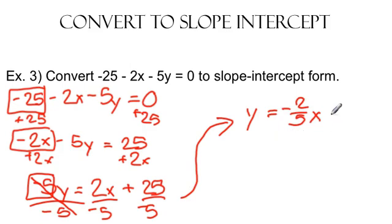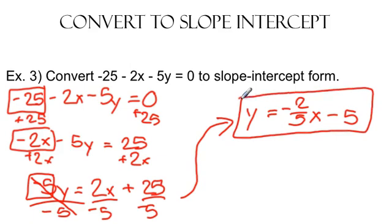And 25 divided by negative 5 is, of course, negative 5. And so there we have our equation in slope-intercept form.